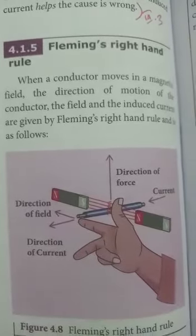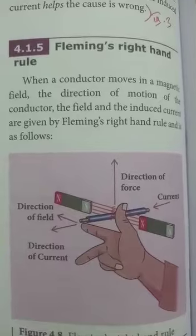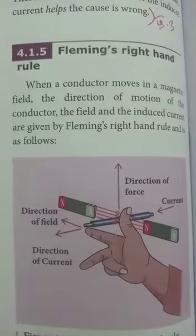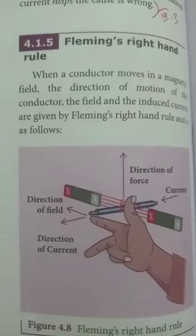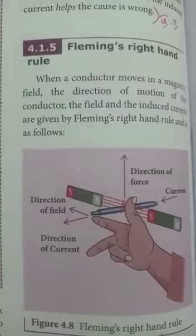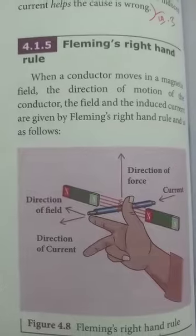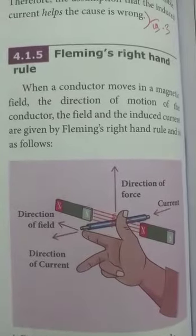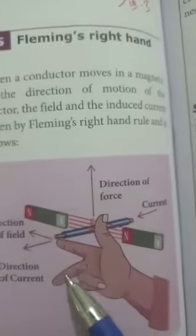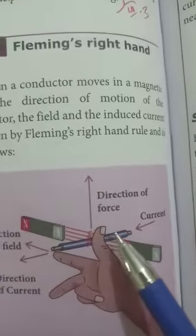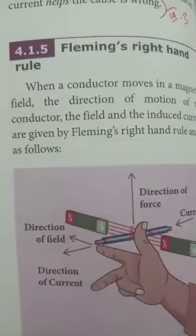Good morning. Today we are going to see about Fleming's right hand rule. When a conductor moves in a magnetic field, the direction of motion of the conductor, the direction of the magnetic field, and the direction of the induced current are given by Fleming's right hand rule. Here, the middle finger, index finger, and thumb are kept perpendicular to each other.